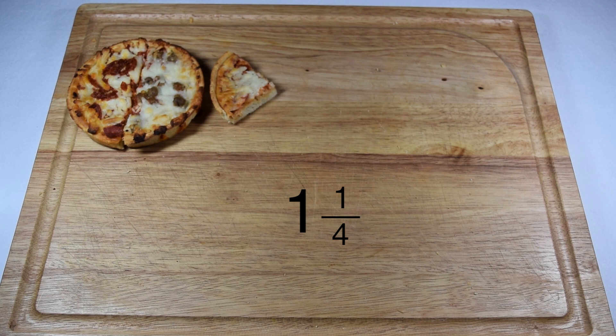So when we multiply with mixed numbers and fractions, it's important to change that mixed number to an improper fraction before multiplying to get the correct solution.